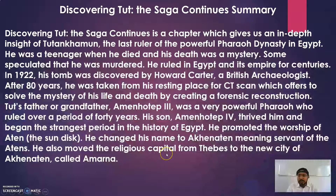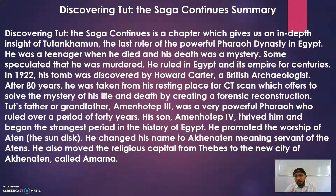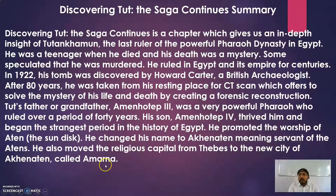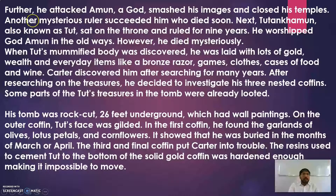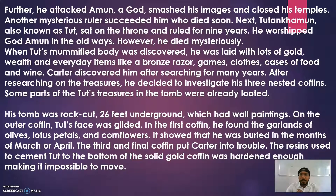Akhenaten also moved the religious capital from Thebes to the new city of Akhenaten, which he called Amarna. Just as Muslims go to Mecca and Christians go to Jerusalem, he shifted the religious capital to this new city. Further, he attacked Amun — a god — smashed his images and closed his temples. Because he promoted the worship of Aten, the sun god, he wanted everybody to worship Aten and destroyed the temples and images of Amun.